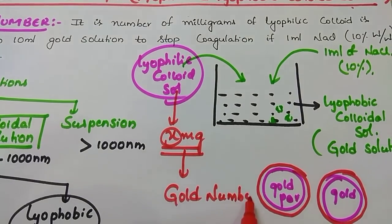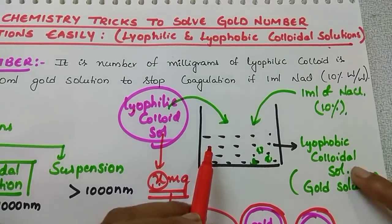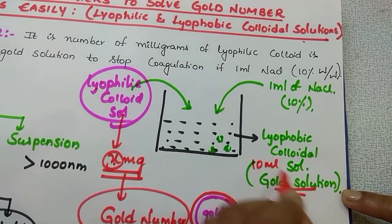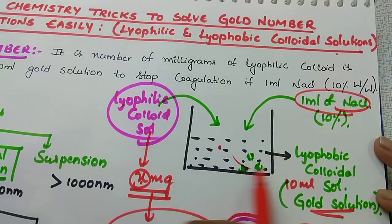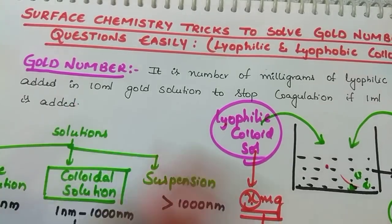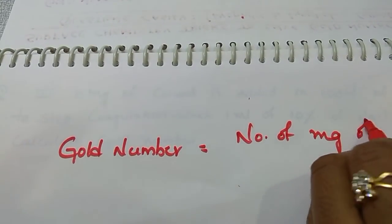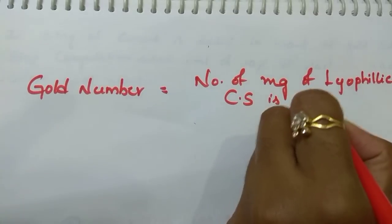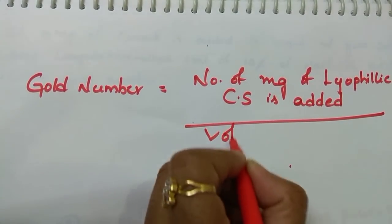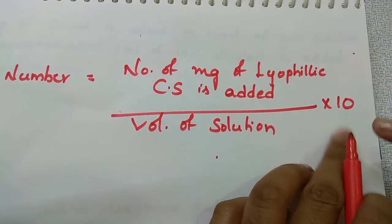Now you read the definition and you will understand. The gold number is defined as the number of milligrams of lyophilic colloidal solution added to 10 ml of gold solution to prevent coagulation when 1 ml of 10% NaCl is added. The formula of gold number is: Gold number = (milligrams of lyophilic colloidal solution added) divided by (volume of solution) into 10. We take a standard 10 ml of gold solution - that's why we multiply by 10.